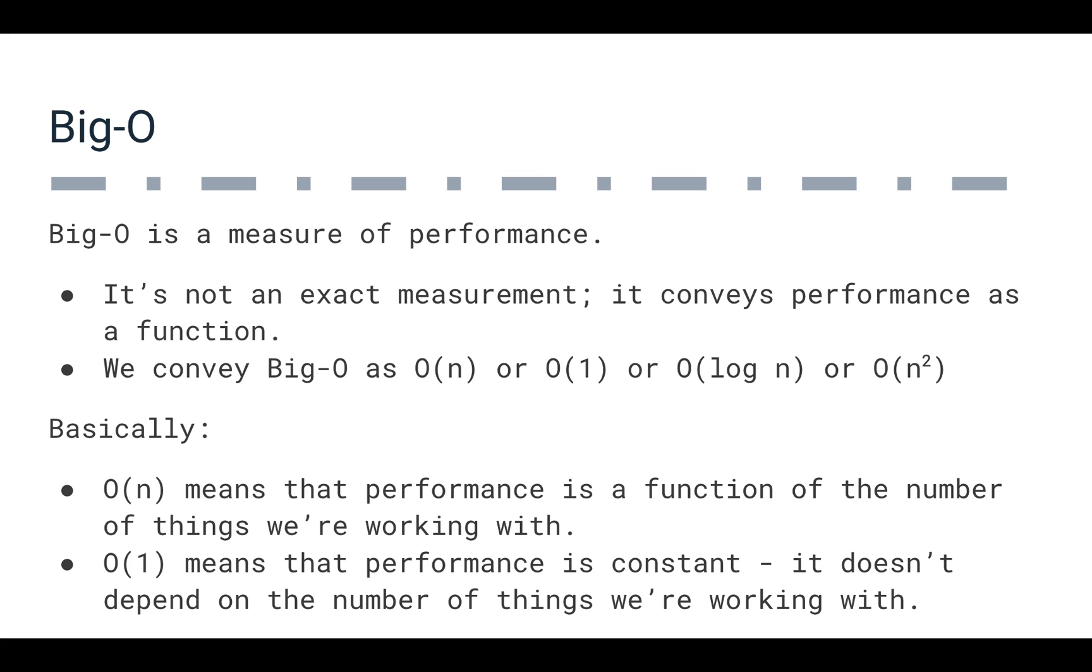When we break this down, more or less what we mean is that Big O of n means that performance is a function of the number of things we're working with. So if we have 10 things, and we're trying to solve a problem, we would expect that solving the problem for 100 things would be 10 times bigger. More or less, we are trying to convey our capability to perform our process as some kind of function of how many things we're working with.